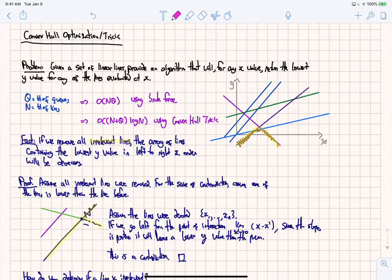So obviously, brute force, we can just go through every single line, evaluate it at x and then store whichever one is the lowest. So if we have q queries and n number of lines, we have O(nq).